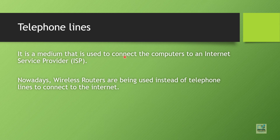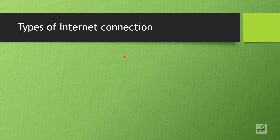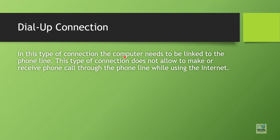As mentioned when explaining the modem, it converts digital data to analog signals that can be transmitted through telephone lines. A telephone line is a medium used to connect computers to an Internet Service Provider. But nowadays wireless routers are used instead of telephone lines, so you will see a router rather than a telephone line.